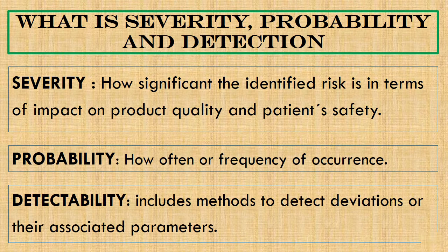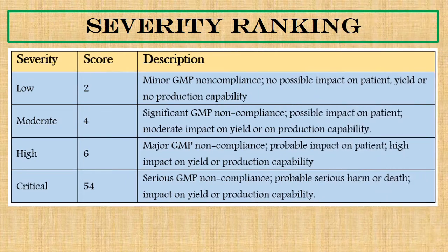To perform the risk prioritization, we rank all three parameters and calculate the risk prioritization number. For severity ranking, severity is most commonly ranked in four classes: low, moderate, high, and critical. Whenever the identified risk will have no or minor GMP non-compliance, no possible impact on patient yield, or no production capability impact is foreseen, we rank it into the low category. As the impact increases, the severity ranking goes on increasing.